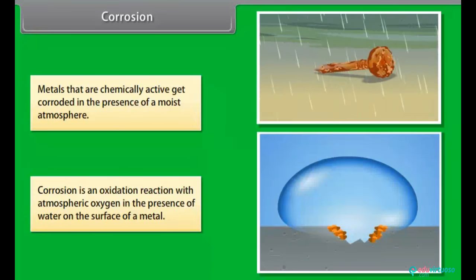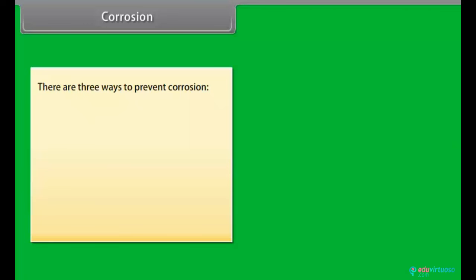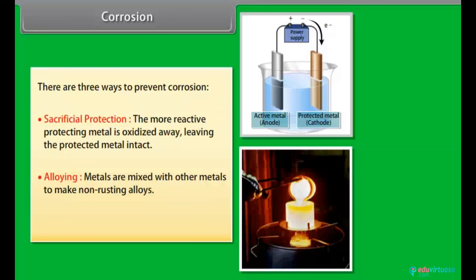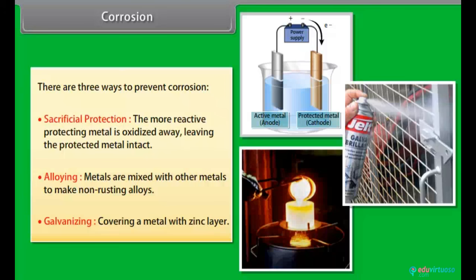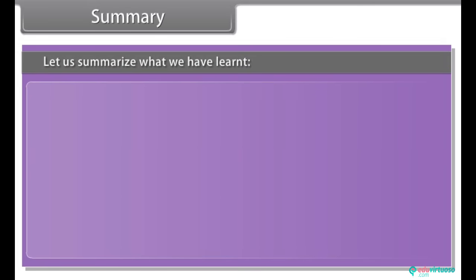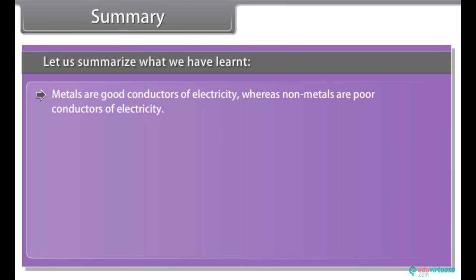However, non-reactive metals like gold, platinum, and mercury do not corrode. There are three ways to prevent corrosion: sacrificial protection, where the more reactive protecting metal is oxidized away leaving the protected metal intact; alloying, where metals are mixed with other metals to make non-rusting alloys; and galvanizing, where a metal is covered in a thin zinc layer produced by electrolytic deposition.